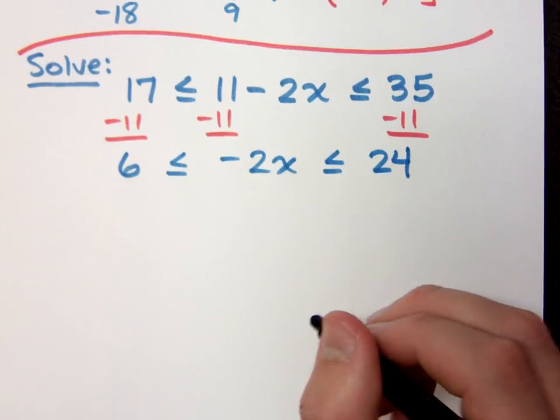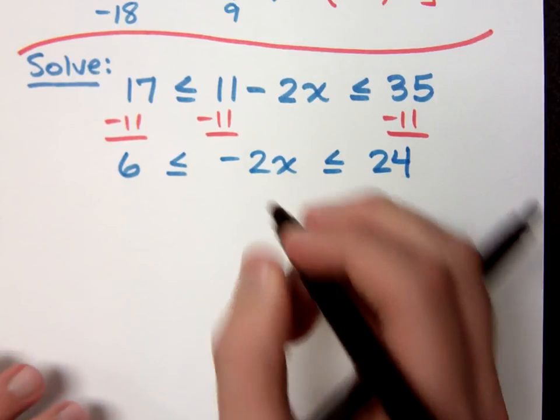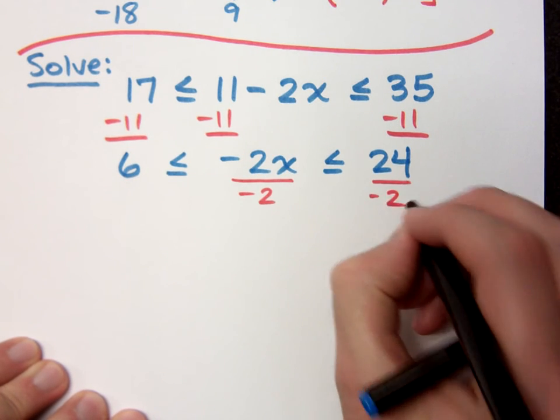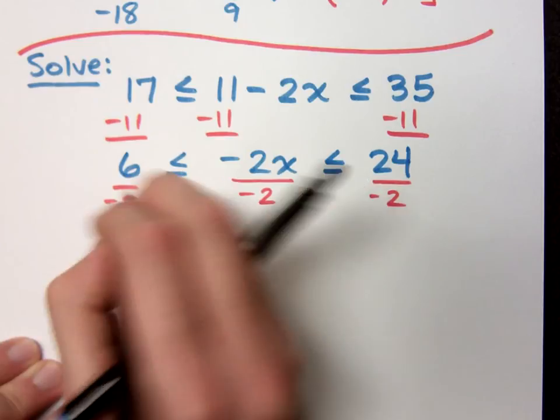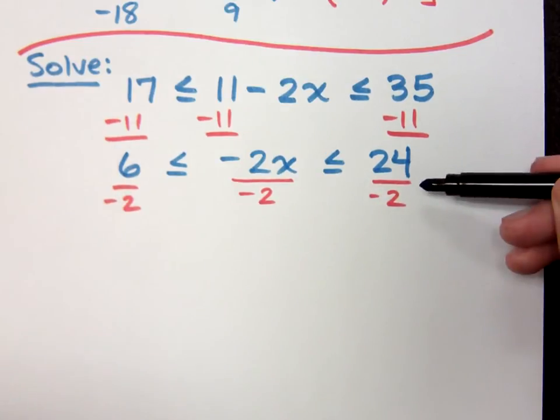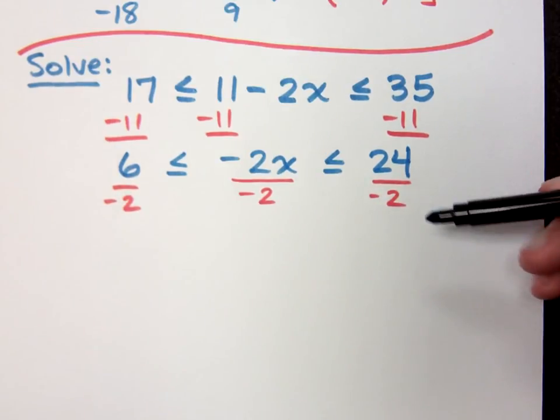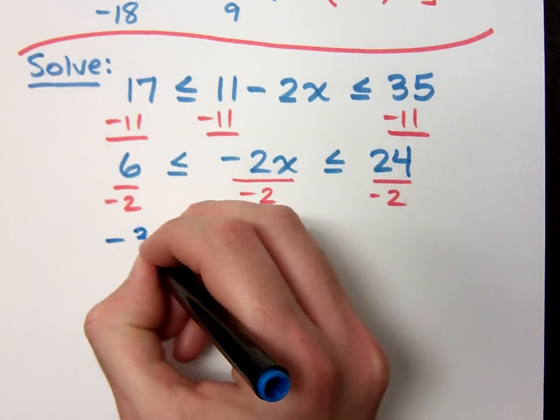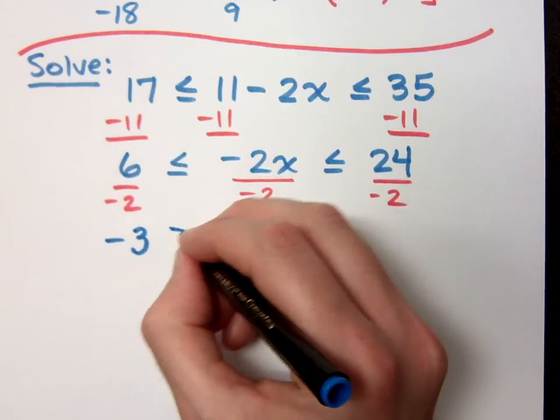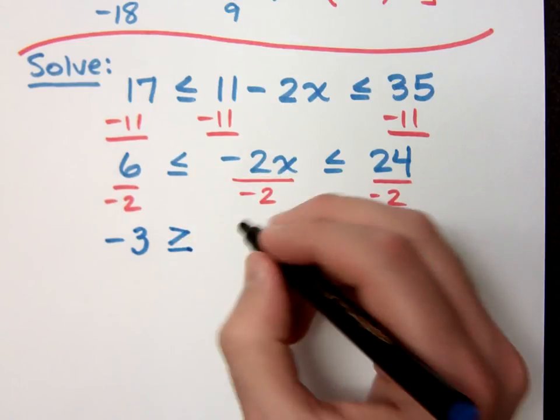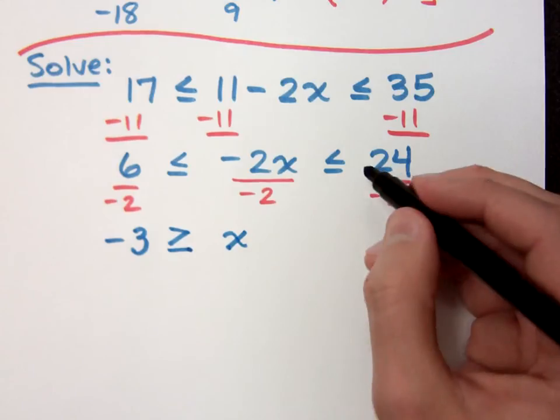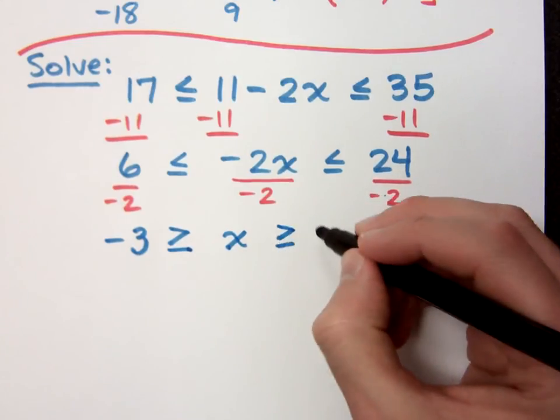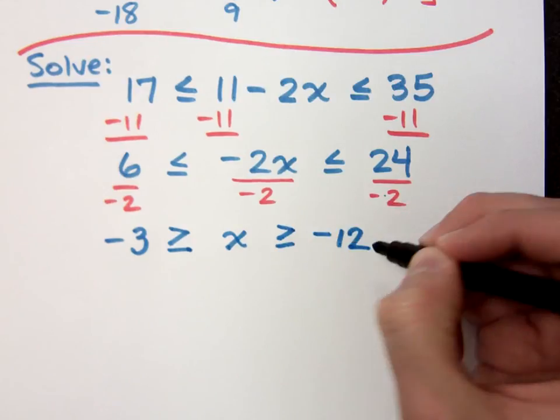Well, I'm almost there. I just have to finish getting x by itself. And I do that by dividing both, or excuse me, all three parts by negative 2. Now notice here that you are doing division with a negative number. So what's going to happen with the inequality? The inequality symbols will change direction. So this is negative 3. This guy now becomes greater than or equal to. This is just x. And this guy is also going to change the direction of the inequality. So that's greater than or equal to negative 12.